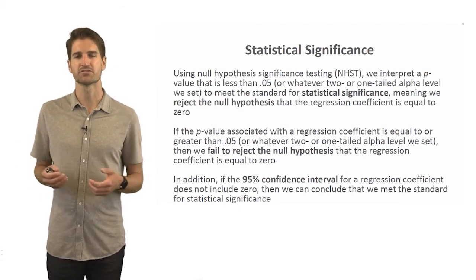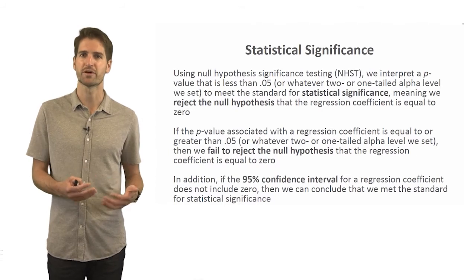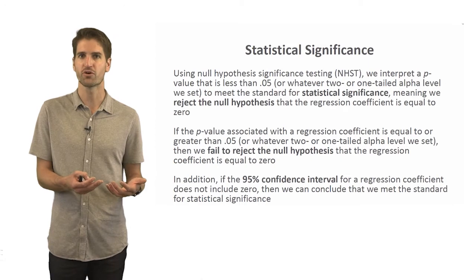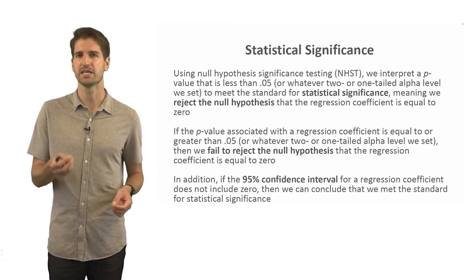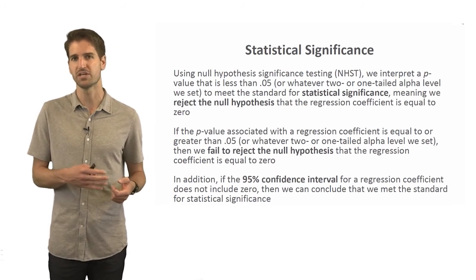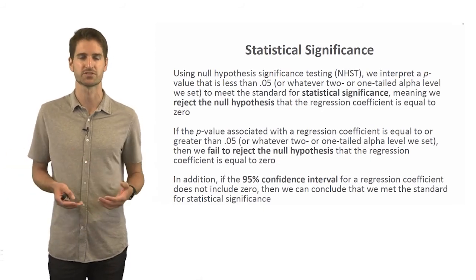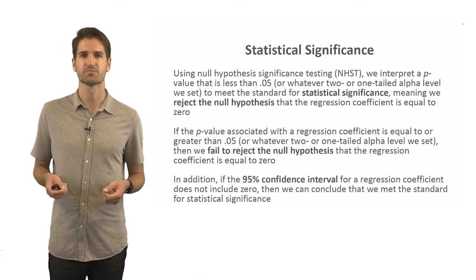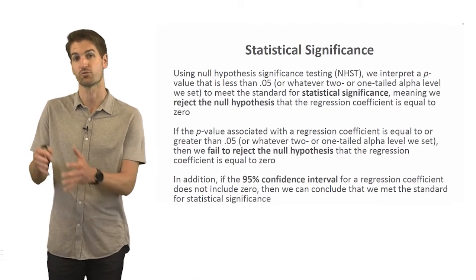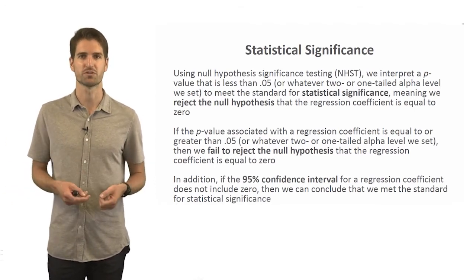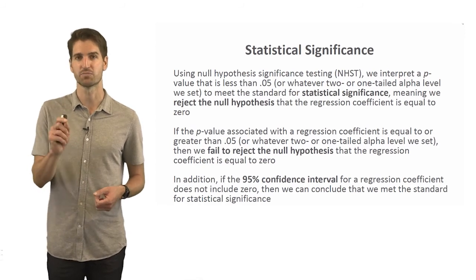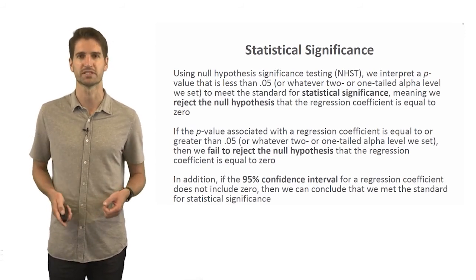You might ask: isn't the intercept value also a regression coefficient in an unstandardized model? Yes — but we're not often interested in that intercept value. Even though there's a p-value and a test of statistical significance associated with it, that's not often something we're really interested in interpreting. We usually jump right to the regression coefficient — the slope — because that's usually where the meaningful relationship is that we wish to test. At least in most contexts within HR analytics, that will be the case.